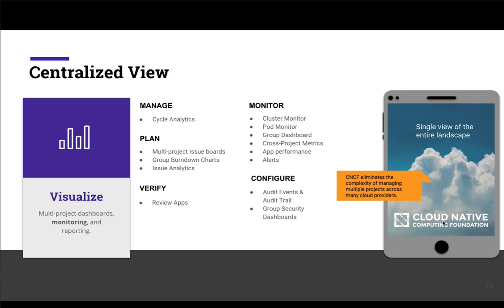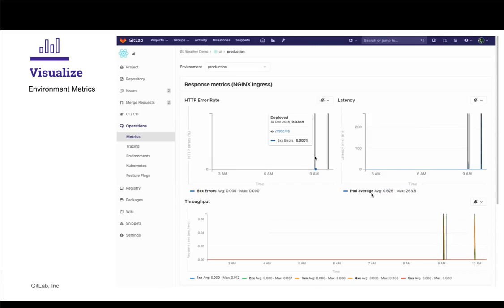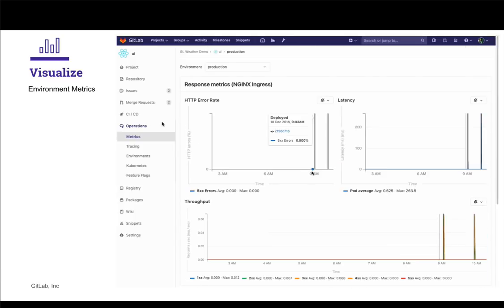As all of the projects and services are now configured, GitLab provides a centralized view into the entire lifecycle, particularly in security and monitoring. Cloud Native Computing Foundation chose GitLab CI to eliminate the complexities of managing multiple projects across multiple cloud providers. With Prometheus monitoring enabled in Kubernetes, monitoring metrics across multiple environments and projects is easy, providing alert configurations to notify the team if something goes wrong.